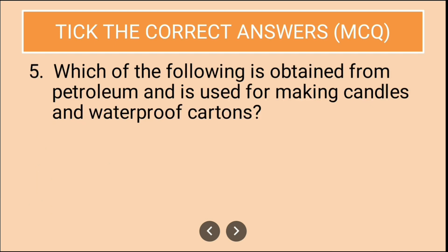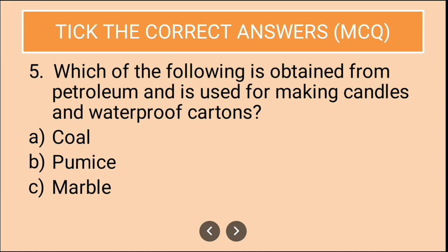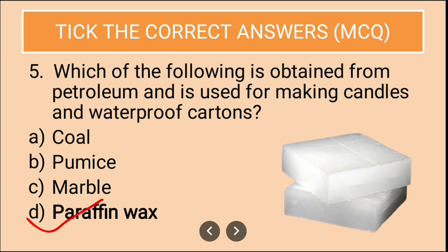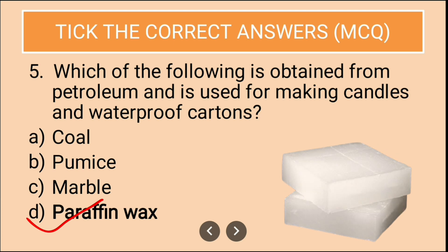Question five: Which of the following is obtained from petroleum and is used for making candles and waterproof cartons? Options are coal, pumice, marble, paraffin wax. The correct answer is paraffin wax, because paraffin wax is used to make candles and waterproof cartons.